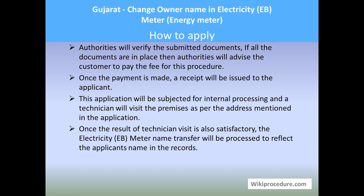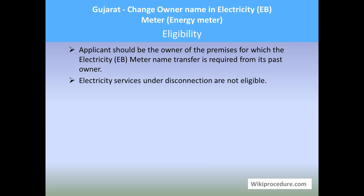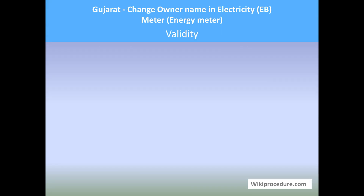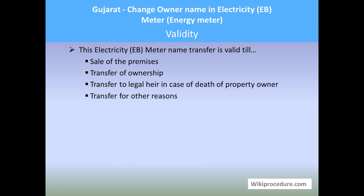Once the results of the technician's visit are satisfactory, the application will be processed further by the respective authorities to transfer the electricity meter name in the records. Eligibility: the applicant should be the owner of the premises for which the transfer of electricity meter is required from its past owner. Electricity services under disconnection are not eligible for this procedure.